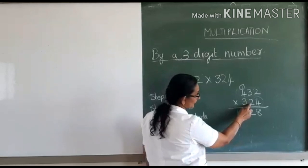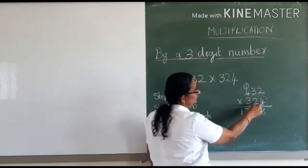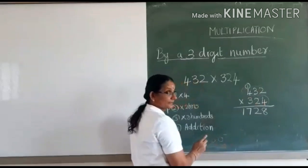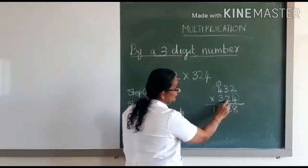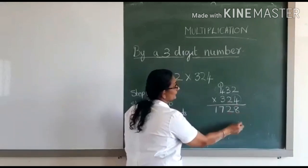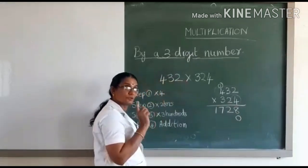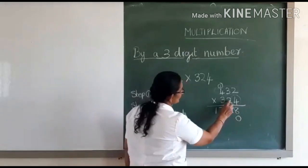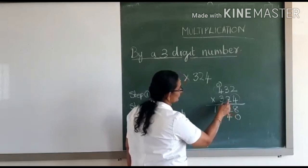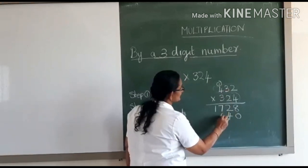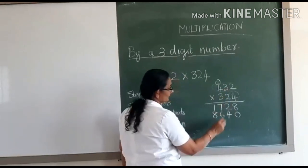Next, we have to multiply four hundred and thirty-two with two tens, because two is in the tens place. When you multiply a number with the digit in the tens place, the digit in the ones place is always zero. Now multiply the number with two: two into two is four, two into three is six, and two into four is eight.